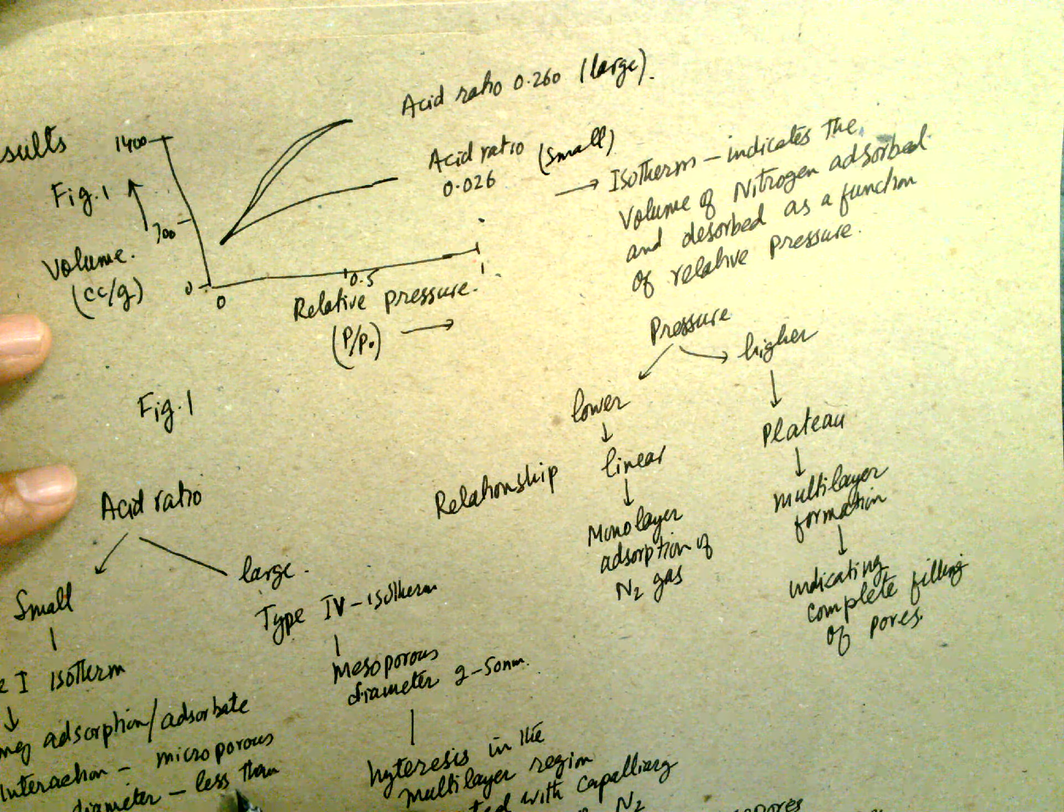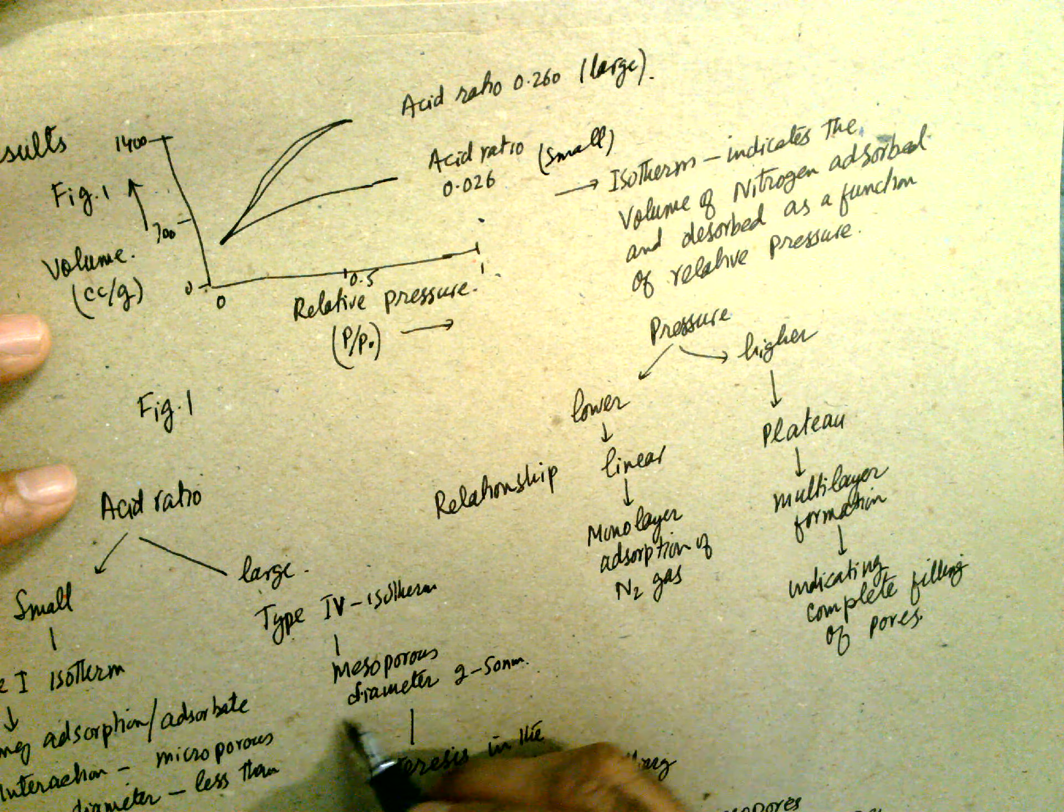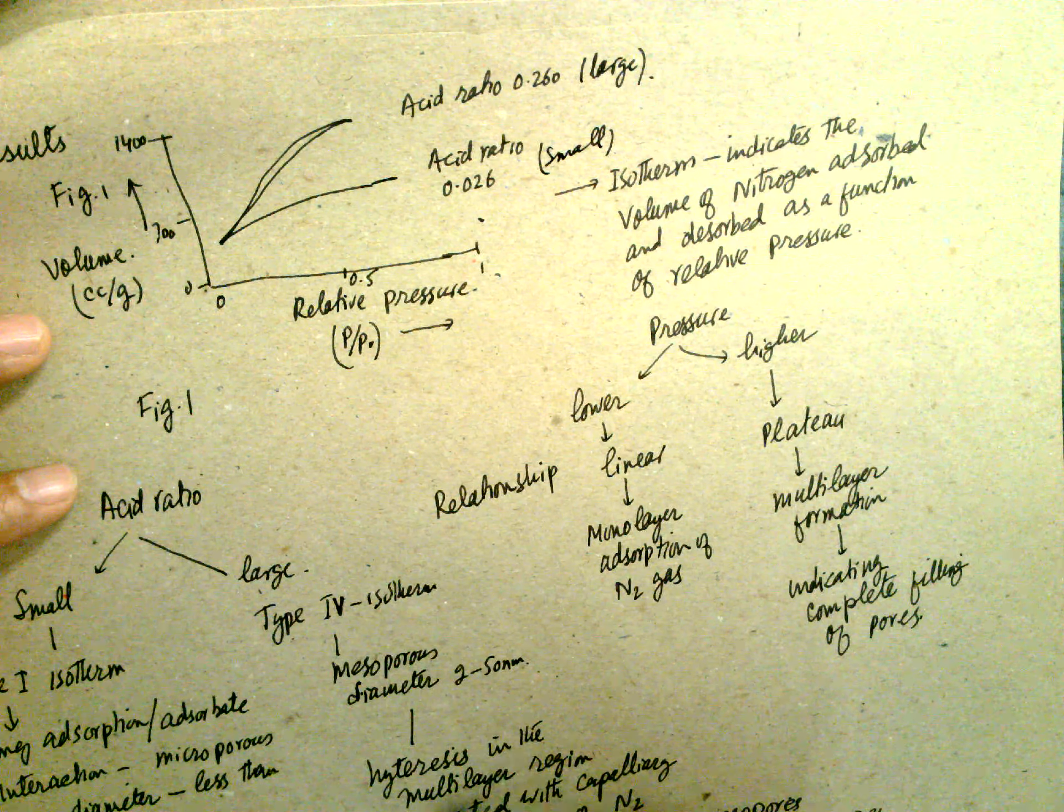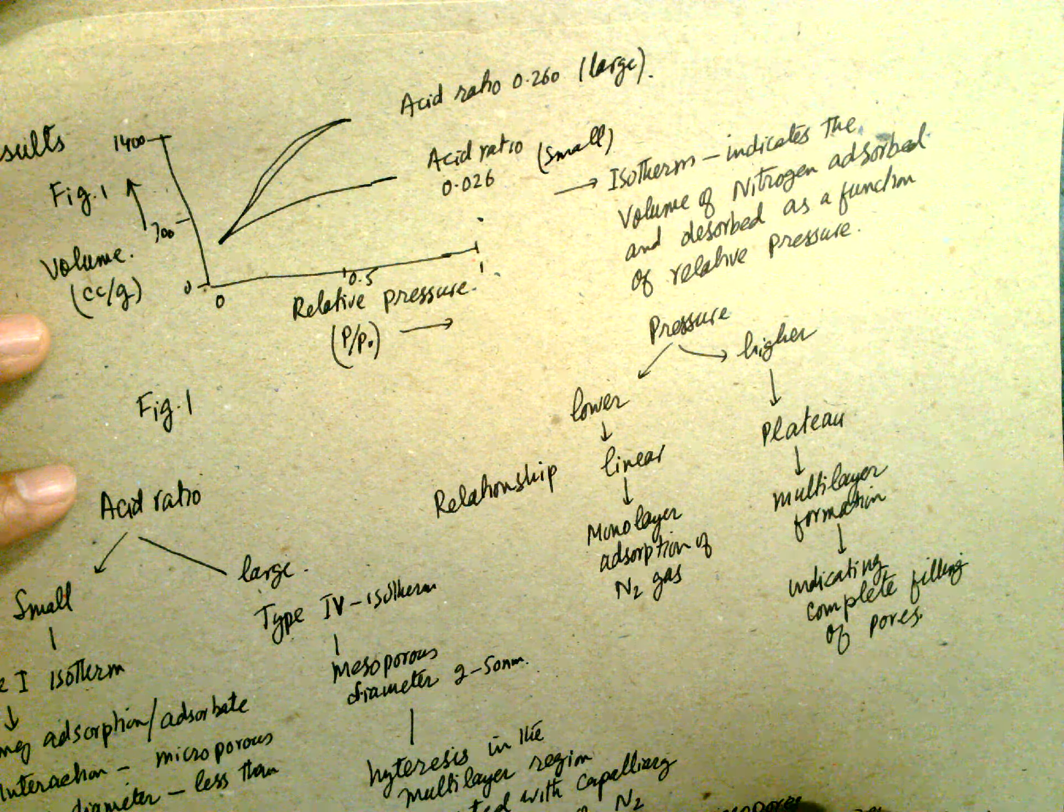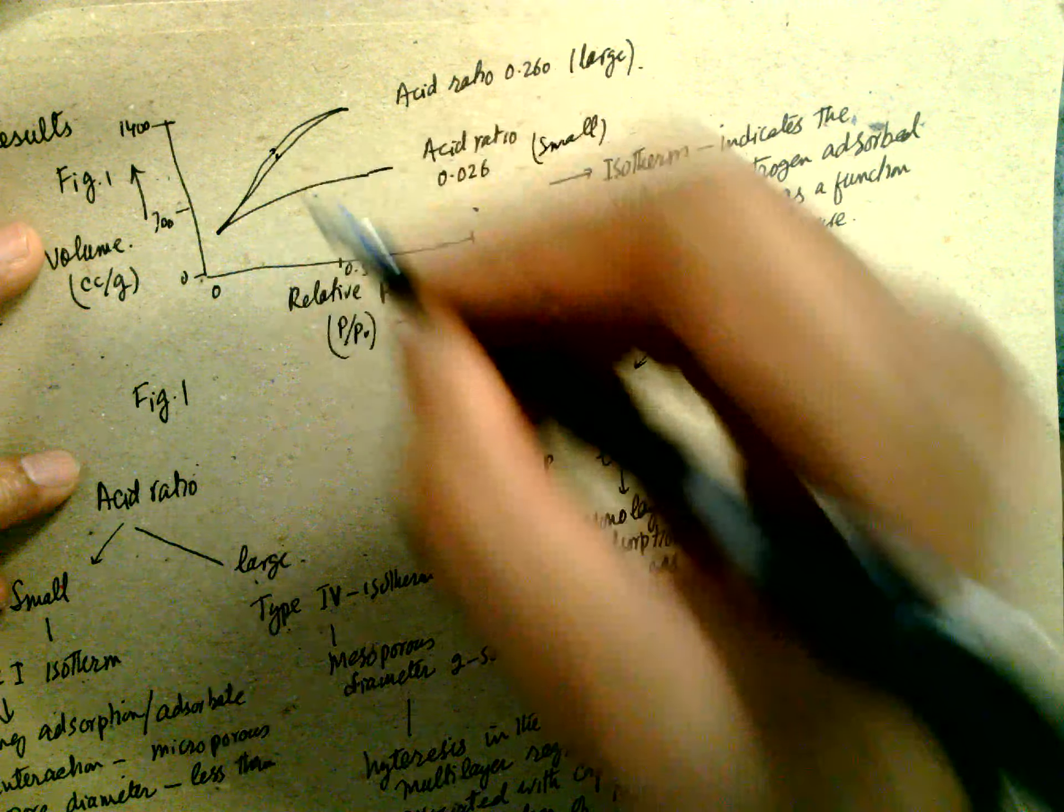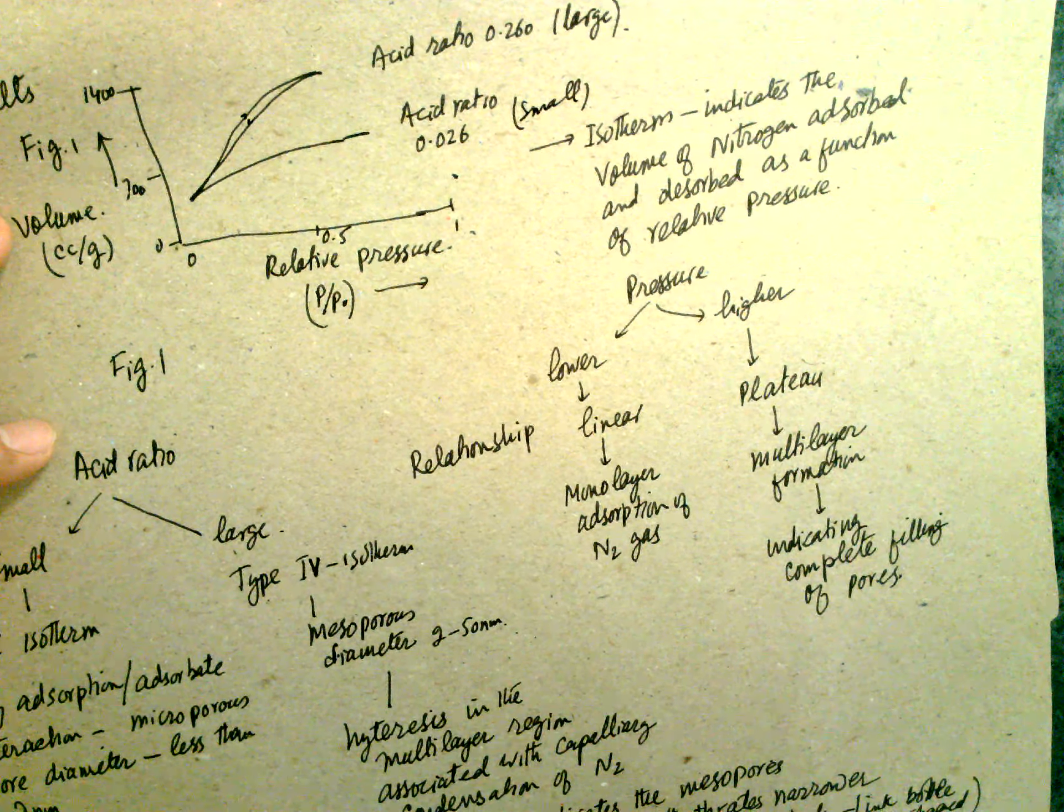Type one, a strong adsorption and desorption interaction, microporous diameter less than 2 nanometer. Type four, mesopores diameter 2 to 50 nanometer. Hysteresis in the multilayer region associated with the capillary condensation of N2. This is a hysteresis.